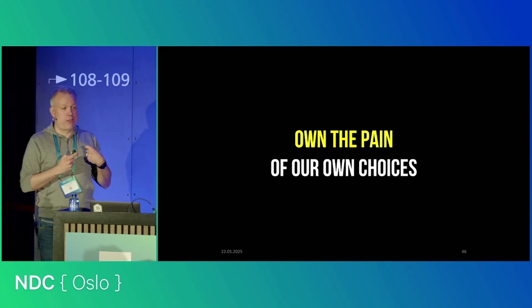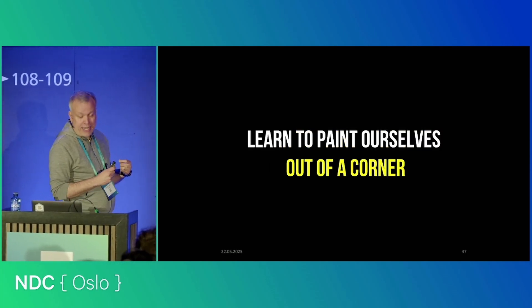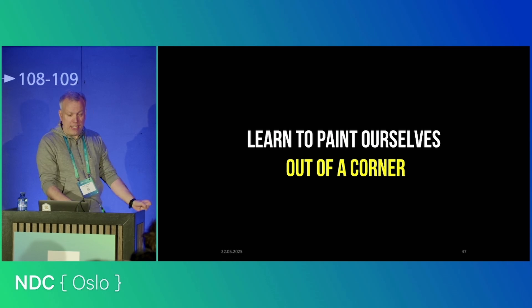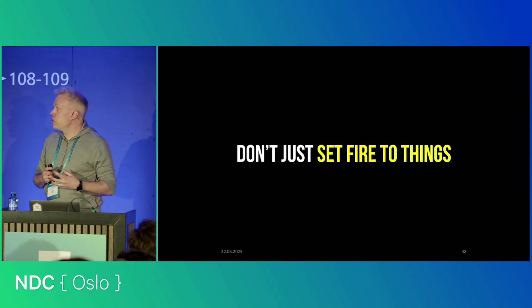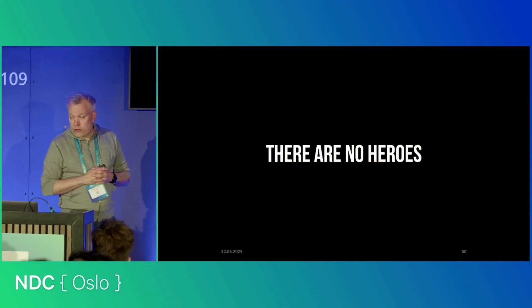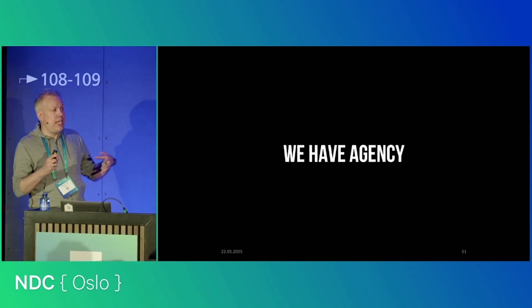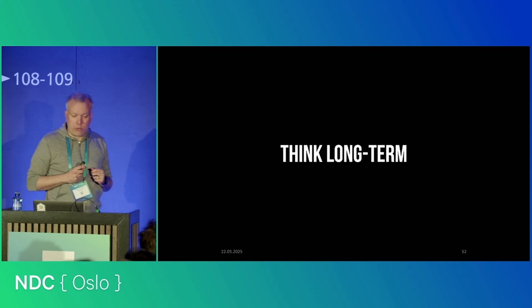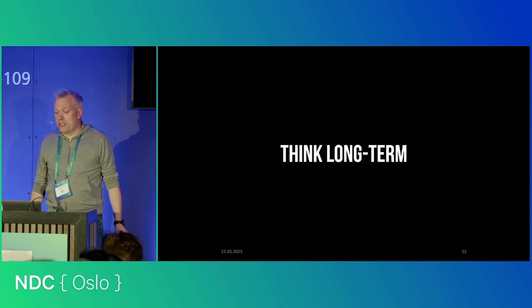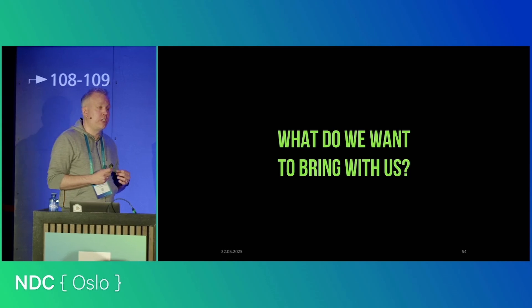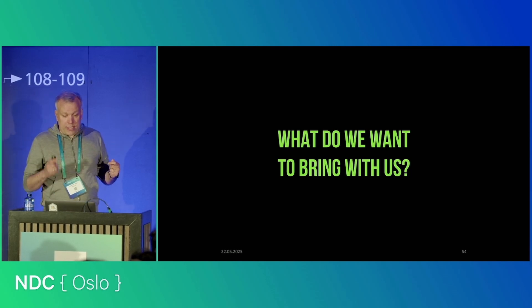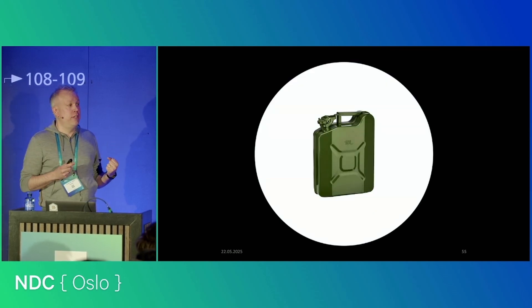No one can take that pain away from us. We need to learn to paint ourselves out of a corner — we've learned in this industry to paint ourselves into corners really quickly, but we need a way to get out of it again, and a better approach than setting fire to things. We want to adopt healthier narratives. First: there are no heroes, we are not heroes, but we do have agency — even beyond just the typing of code. It's important that we learn to think long-term so that we don't paint ourselves into these corners. We need to learn to be good custodians. And it's also important for the day that you decide to move on: what are the things you're going to bring with you to a new job — is it going to be this, or something more constructive? Thank you.